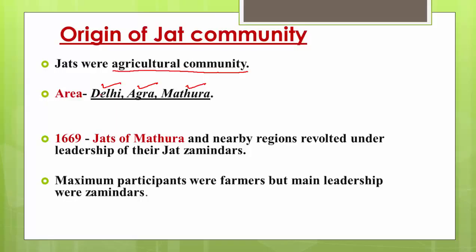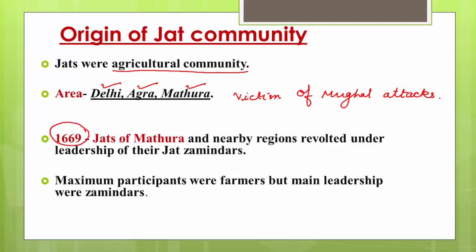As they lived near Delhi, they were in the neighborhood of the Mughal Empire, and often they were victims of Mughal attacks. Because they lived near the center of the Mughal Empire, they used to always struggle against Mughal power. In 1669, the Jats of Mathura and nearby regions revolted.